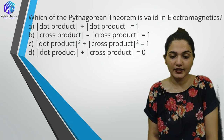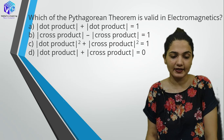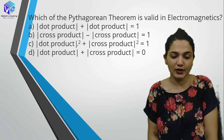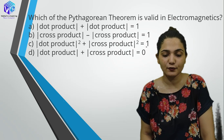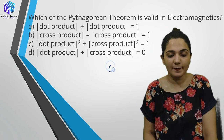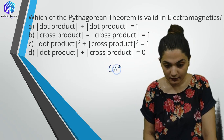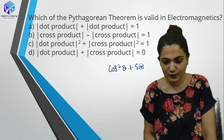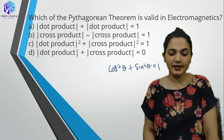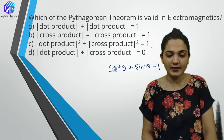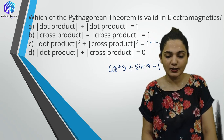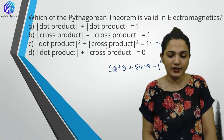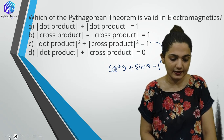Which Pythagorean theorem is valid in Electromagnetics? Using the formula: dot product squared + cross product squared = |A|²|B|² gives cos²θ + sin²θ = 1, which is the Pythagorean identity. This equation validates the Pythagorean theorem in Electromagnetics.